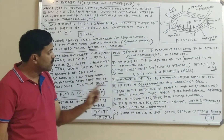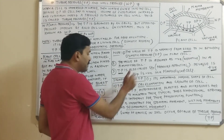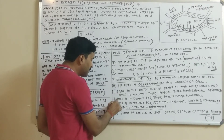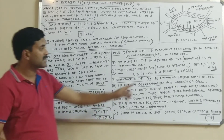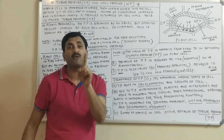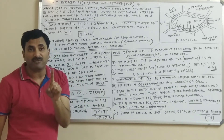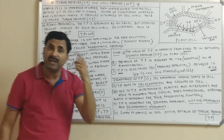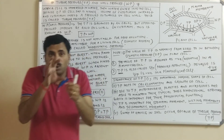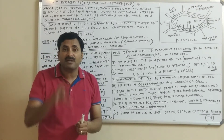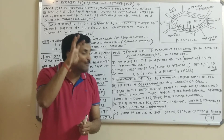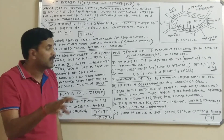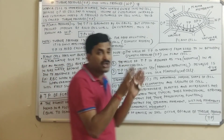Now let's look at the significance of turgor pressure. First, it maintains the normal shape of the cell — when a cell is turgid, the protoplasm is pressed against the wall, and the normal shape is maintained. Turgor pressure also maintains the shape of soft organs found in plants.